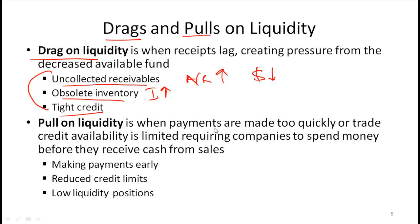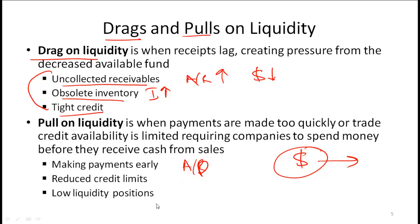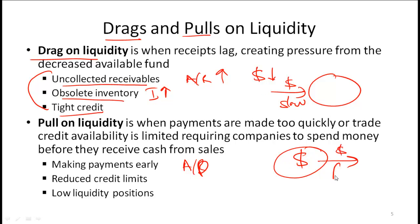Pull on liquidity is when payments are made too quickly — cash leaves your company faster than it should, or trade credit availability is limited, requiring companies to spend money before receiving cash from sales. If accounts payable is decreasing too fast, credit limits are reduced, or liquidity positions are low, that is a pull on liquidity. Simply put: a drag slows down money coming in, while a pull means cash leaves the company too fast.